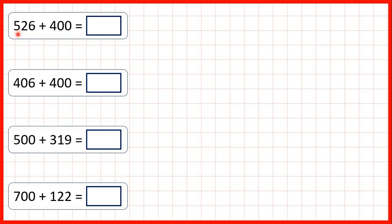First we have 526 plus 400. Because we're adding hundreds and not adding any tens or ones, we can highlight our hundreds digits. We can see that we have five hundreds and we're adding four hundreds, so in our answer we have nine hundreds. The tens and ones digits stay the same because we're not adding any tens or ones, so we get 926.